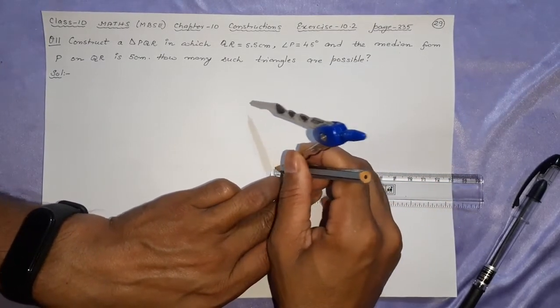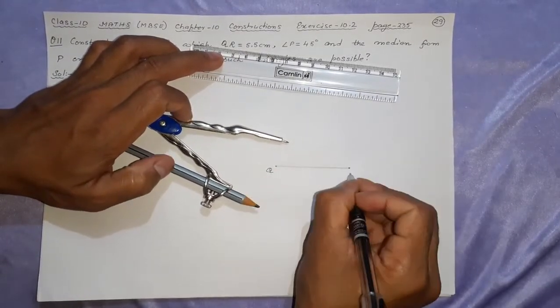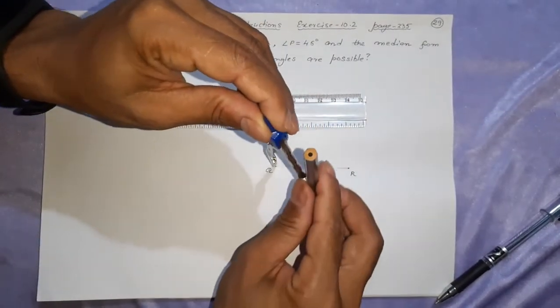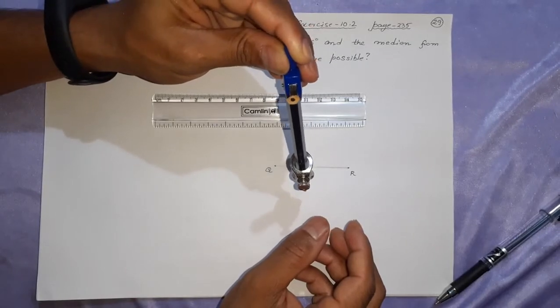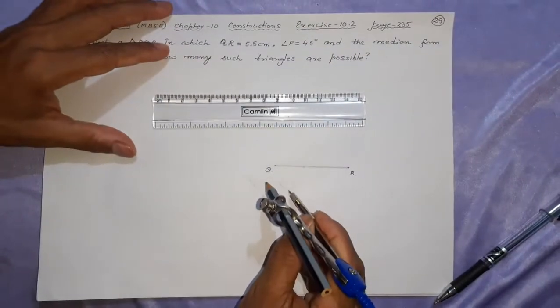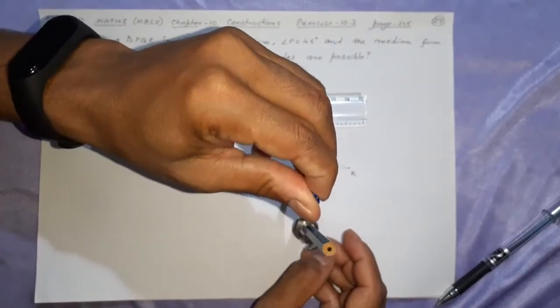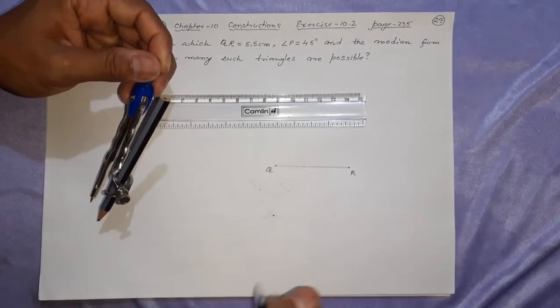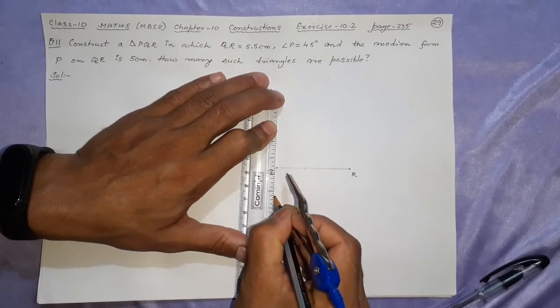Between 5 and 6 is 5.5. This is PQR, means here will be Q, here will be R. Make that angle 45 degrees below this QR. How to make one? First you make 90 degrees and half of it.